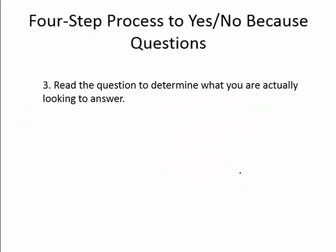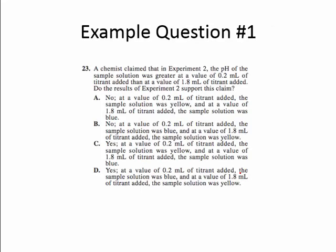Step three is to read the question to determine what you're actually looking to answer — whether it's yes or no. Our question is: a chemist claimed that in experiment 2, the pH of the sample solution was greater at a value of 0.2 milliliters of titrin added than at a value of 1.8 milliliters of titrin added. Do the results of experiment 2 support this claim? Now we need to figure out the yes or the no, so let's go back to the passage and find what it tells us about pH.